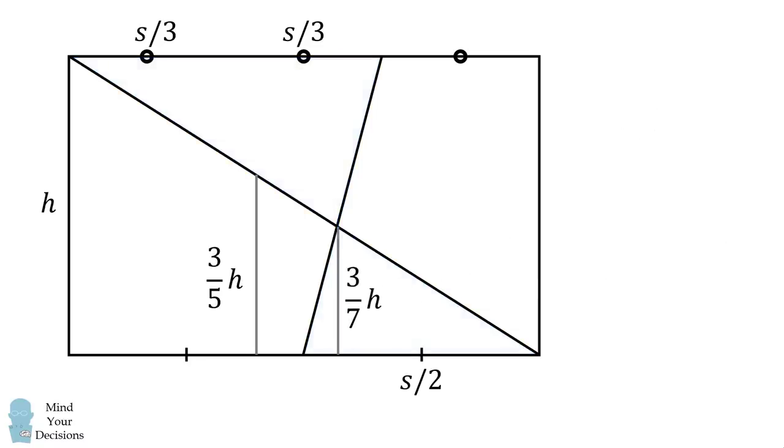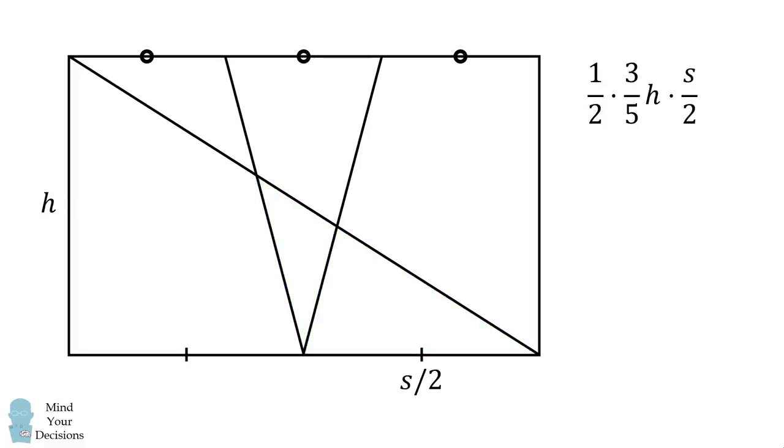We substitute this in and now we can solve the problem. First, we will calculate the area of this triangle. Notice that we know its height and we know its base, so its area will be one-half the height times its base. We then will calculate the area of this triangle, and again we know its height and we know its base. So we calculate its area and we want to subtract this area. The result will be the area of this triangle.